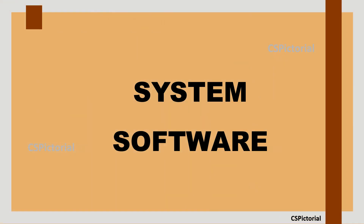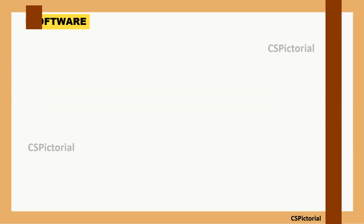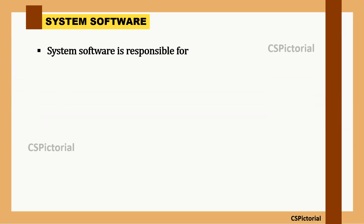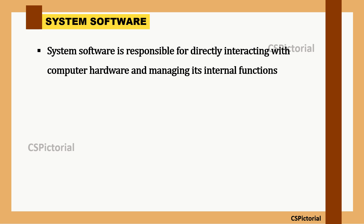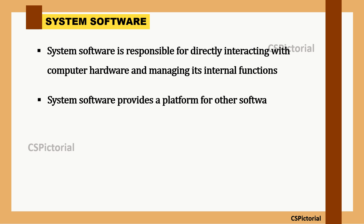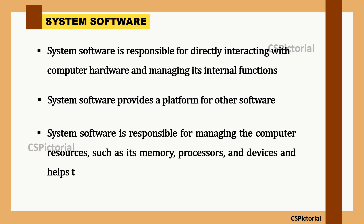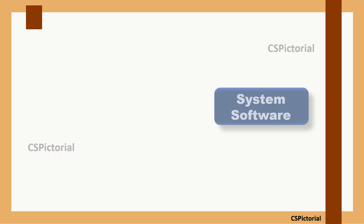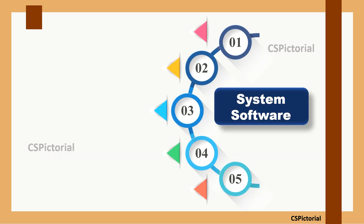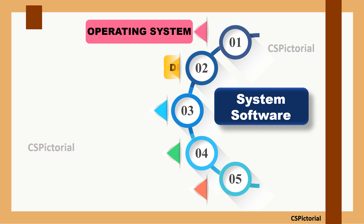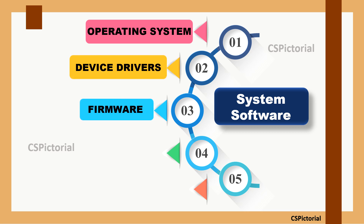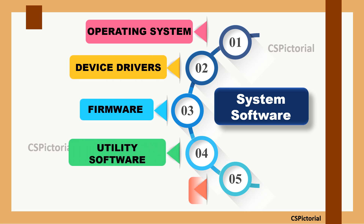System software is responsible for directly interacting with the computer hardware and managing its internal functions. It provides a platform for other software and manages computer resources such as memory, processors, and devices. Various types of system software used in a computer are: operating system, device drivers, firmware, utility software, and language processors.